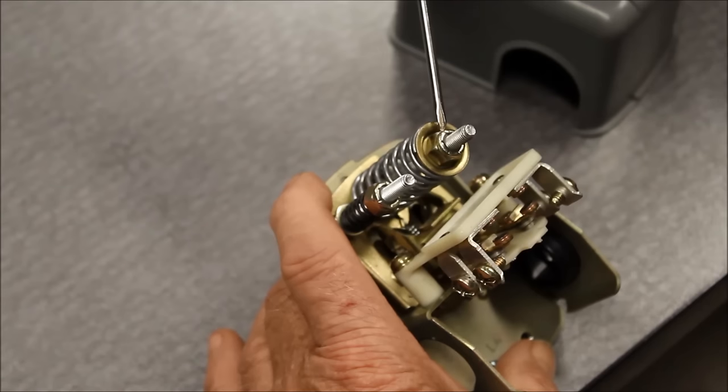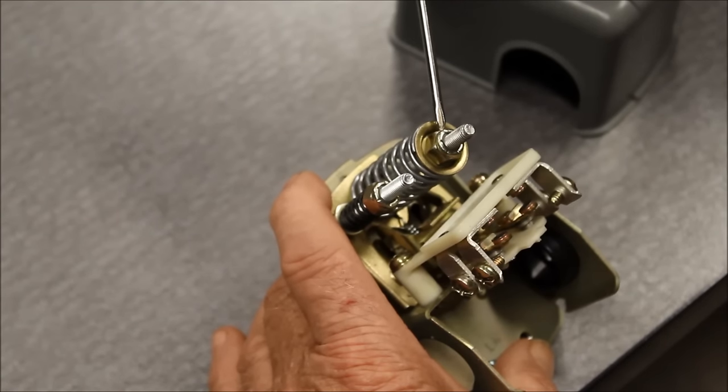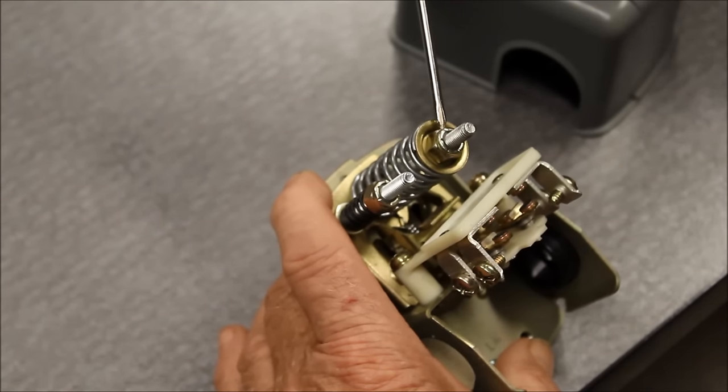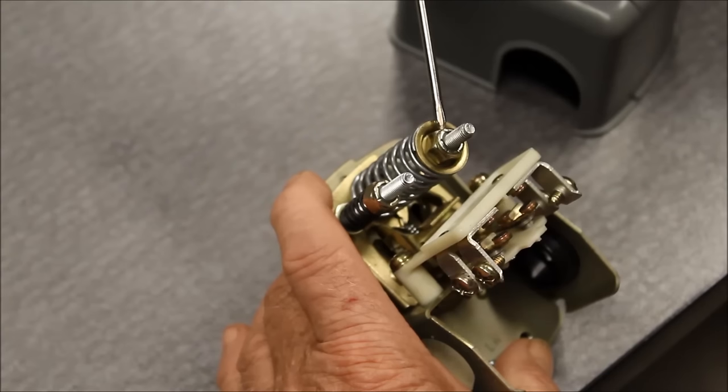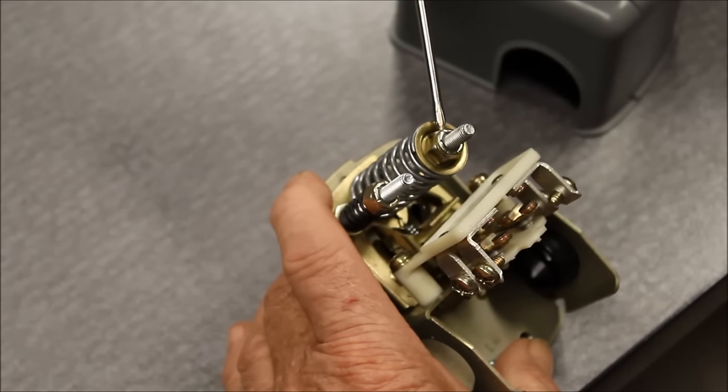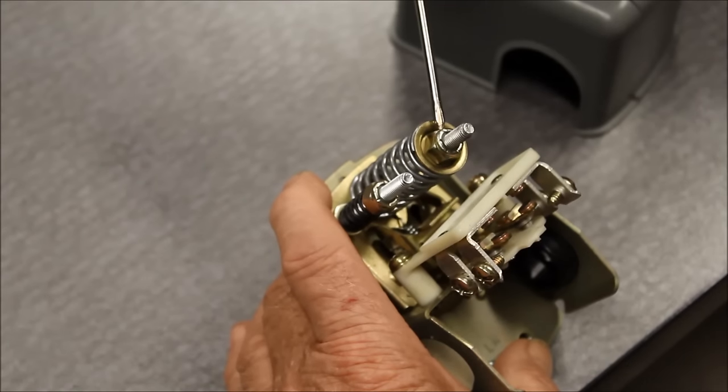If you tighten the nut three complete turns, you've increased the pressure by 10 pounds. A 20/40 switch then becomes a 30/50. If you loosen the nut three turns, it lowers by 10 pounds. A 30/50 switch adjusted 10 pounds lower becomes a 20/40. You'll note that the only difference in the switches themselves is the adjustment tension on the spring.